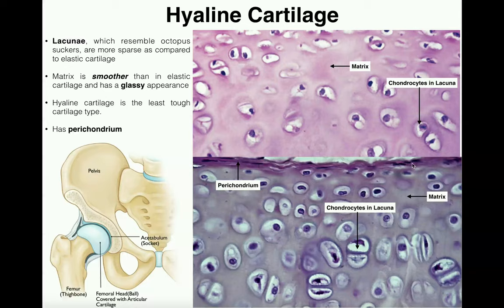Hyaline cartilage is found on the articulating surfaces of bones, so in joints — for example, the joint cartilage that gets worn away and causes people to need a hip replacement is made of hyaline cartilage. Also, the fetal skeleton, before a fetus actually gets bone, is made of hyaline cartilage as well.